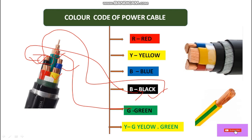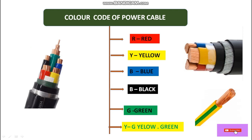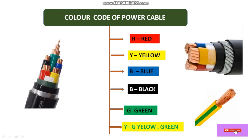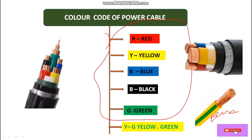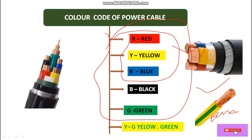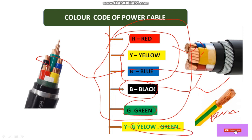Green is always used as an earth wire. However, we also see yellow-green — a combination of yellow and green — which can also be used for the earth wire. So R, Y, B are used for phase cable; black is for neutral; and green or yellow-green is for earth.